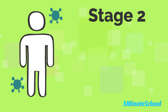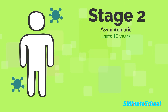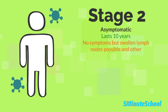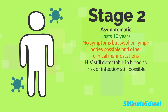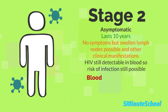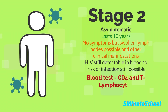Stage 2 is the asymptomatic phase, and this stage usually lasts on average about 10 years. Generally, there are no major symptoms, but there may be some swollen lymph nodes and other clinical manifestations. Although it's asymptomatic, people can still remain infectious, and HIV antibodies are detectable in the blood, so an antibody test will show a positive result. CD4 cells and T lymphocytes on a blood test should be around 500 cells per cubic millimeter or a bit over.